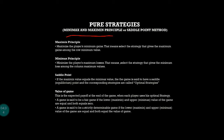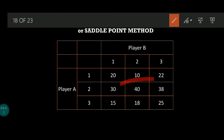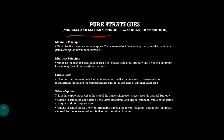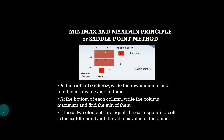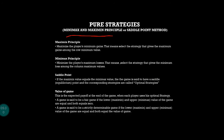Player A adopts the maximin principle and player B adopts the minimax principle. In the maximin principle, you select the strategy that gives the maximum gain among the row minimum values. For the minimax principle, among the columns you find the maximum value and from those you find the minimum value.